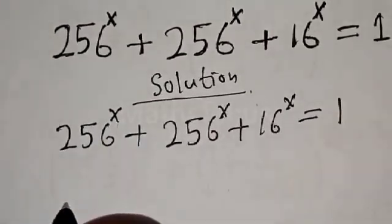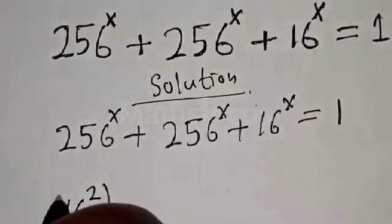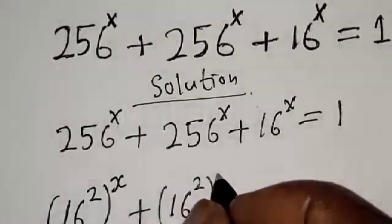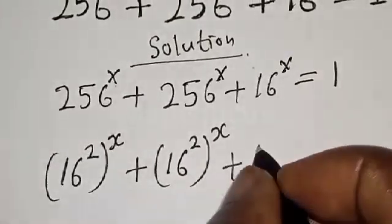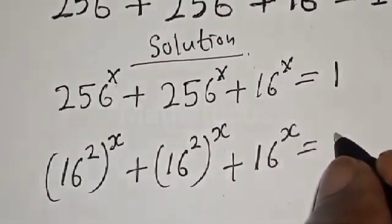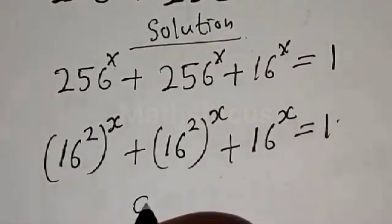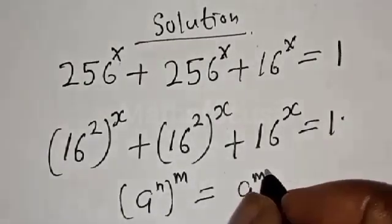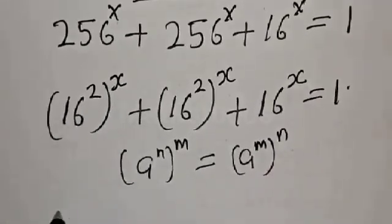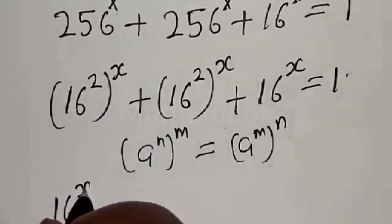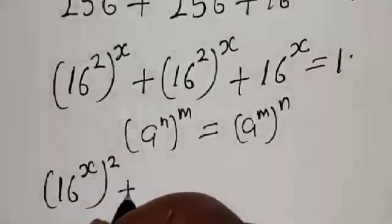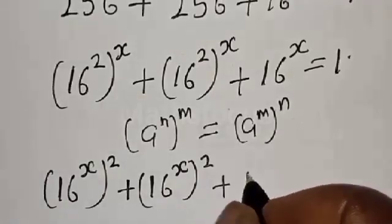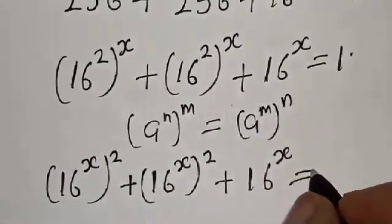Now 256 is the same thing as 16 squared. So we have 16 squared raised to power s plus 16 squared raised to power s plus 16 raised to power s is equal to 1. Remember, a raised to power n raised to power m is the same thing as a raised to power n times m. Then we have 16 raised to power 2s plus 16 raised to power 2s plus 16 raised to power s is equal to 1.